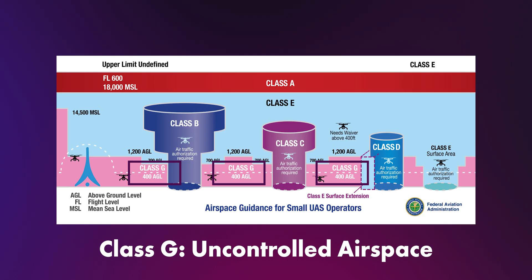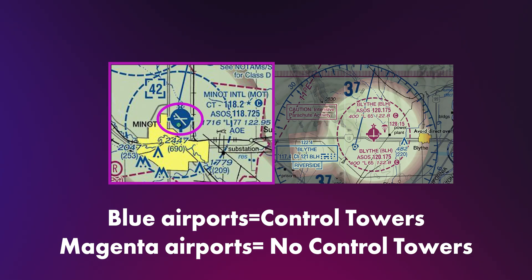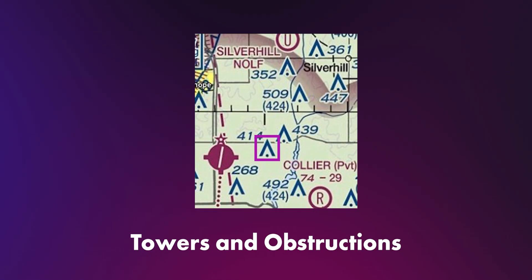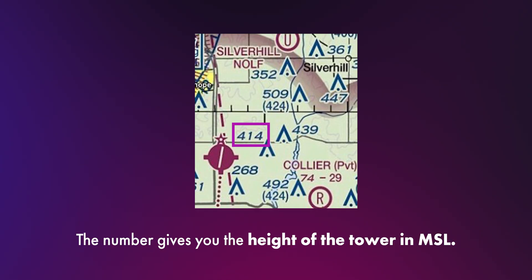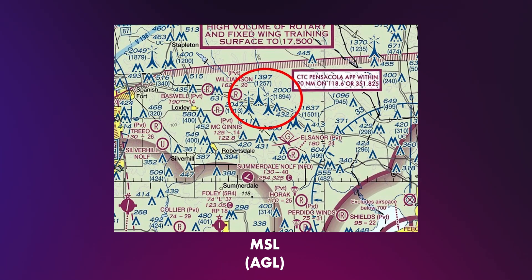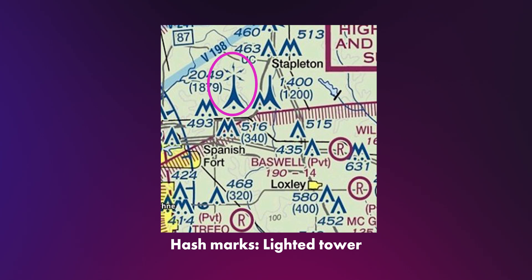Let's review some key symbols you should know for the test. Blue airports have control towers; magenta airports do not. Tick marks around the airport circle indicate that fuel is available during normal operating hours. A symbol that looks like a mountain means there's a tower. Next to it you'll see a number like 414, meaning the top of that tower is 414 feet MSL — note that we do not add zeros to obstacle numbers. If you see two numbers stacked, the top is MSL and the bottom is AGL. If the obstacle is lighted, it will have hash marks around it.